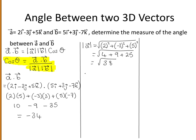Now the modulus of vector b. Vector b is equal to 5i plus 3j minus 7k, so the modulus of vector b is equal to the square root of 5 squared plus 3 squared plus minus 7 squared.